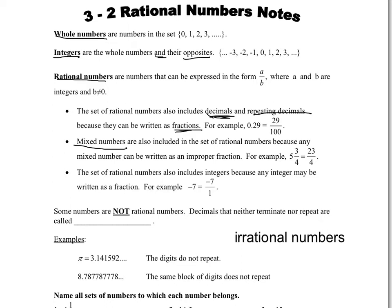For example, 5 and 3 fourths is 23 fourths, because we do 4 times 5 to get 20, add 3, and get 23 fourths. Now the set of rational numbers also includes integers because any integer can be written as a fraction. For example, negative 7 can be written as negative 7 over 1. Even just the whole number 3 can be written as 3 over 1. So whole numbers are included in that.